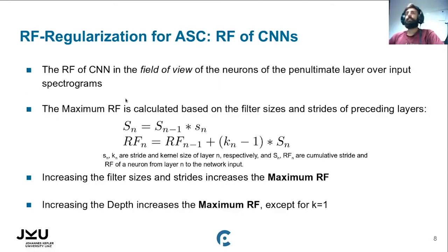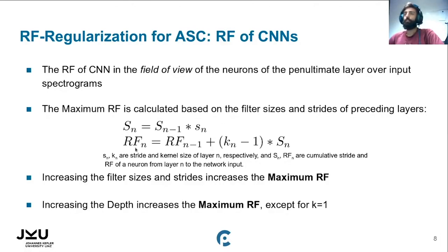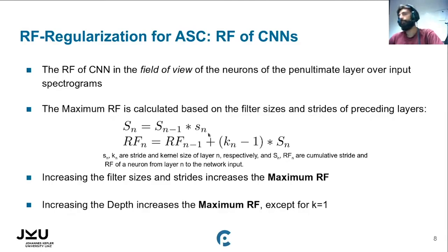The Receptive Field of a CNN is the field of view of the penultimate layer, or the classification layer before global average pooling, with respect to the input spectrograms. You can calculate this maximum Receptive Field based on the filter sizes and strides of all previous layers in the CNN using a recursive formula. The RF of layer N is the RF of layer N-1 plus the kernel size of that layer times the accumulative stride, where the accumulative stride is computed by multiplying the strides of all previous layers. Increasing kernel size or strides increases the Receptive Field. However, adding layers with a kernel size of 1 doesn't increase the Receptive Field, since that term cancels out.